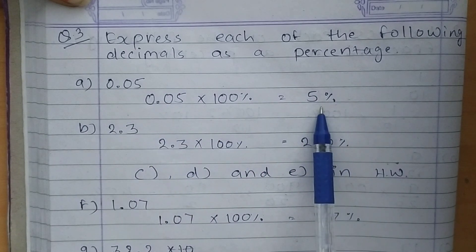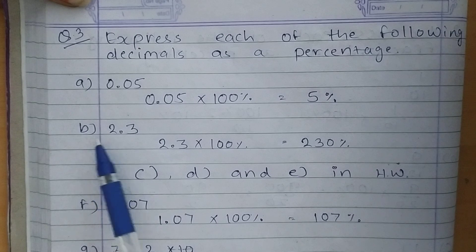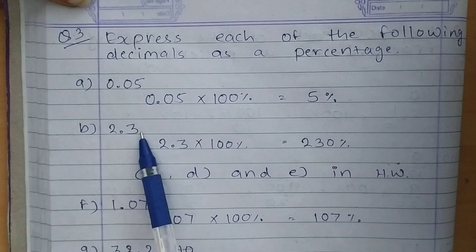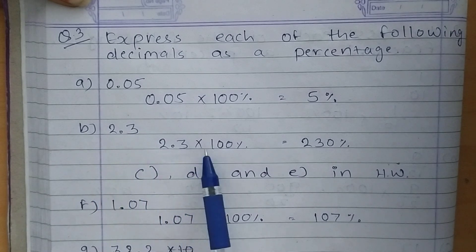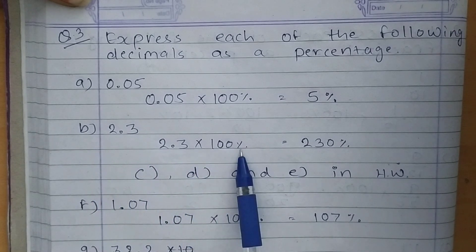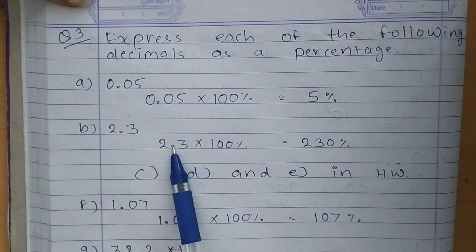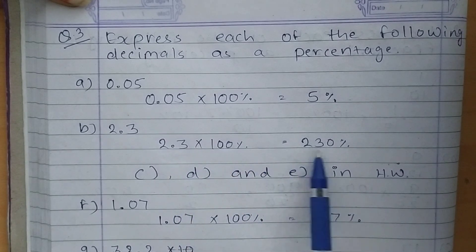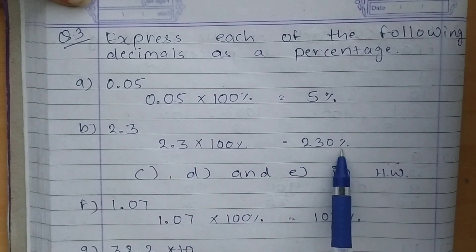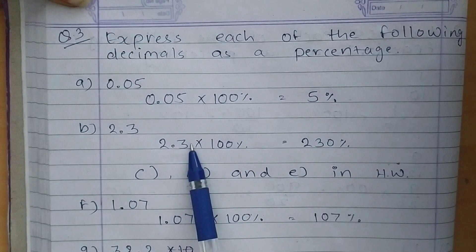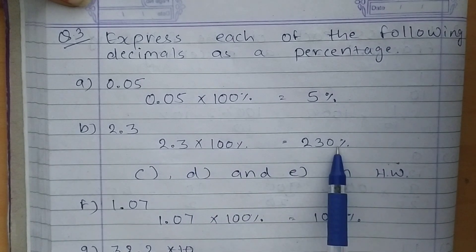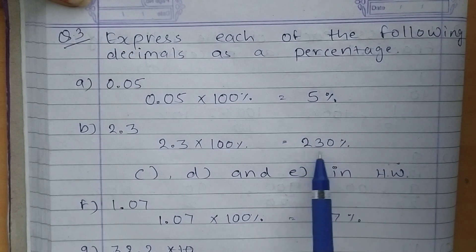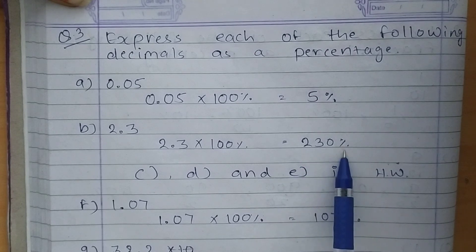Next, Part B: 2.3. 2.3 multiply 100%. Shift the decimal point two places to the right. The second digit is not given, so write down 0 on your own. So the answer is 230%.